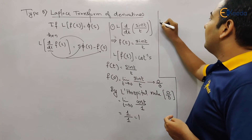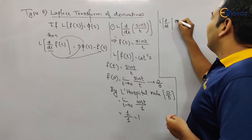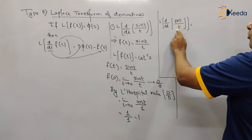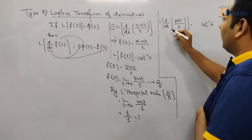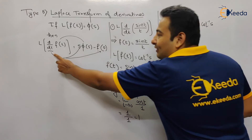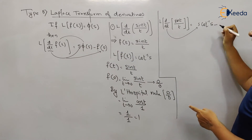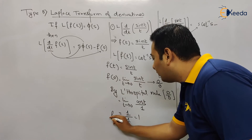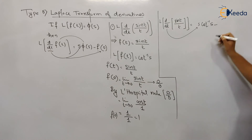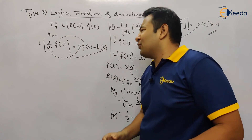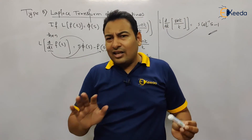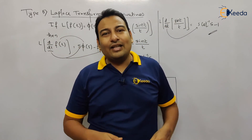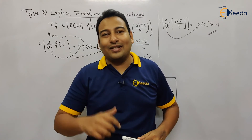Finally, Laplace of d/dt of (sin t / t) equals: Laplace of sin t / t is cot⁻¹(s), and due to the d/dt, we put s in front: s·cot⁻¹(s) minus f(0), which is 1. So the answer is s·cot⁻¹(s) − 1. It's very simple — if you know the previous type, just find the Laplace and due to the d/dt put s and subtract f(0). In the next video we'll discuss more examples of the same type. Thank you.